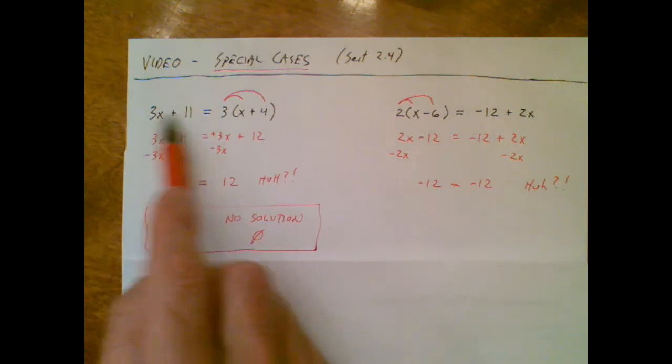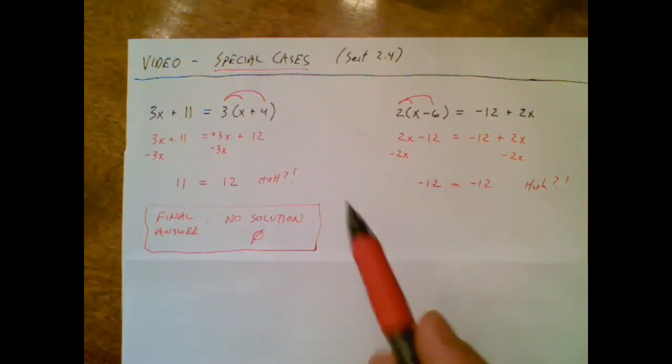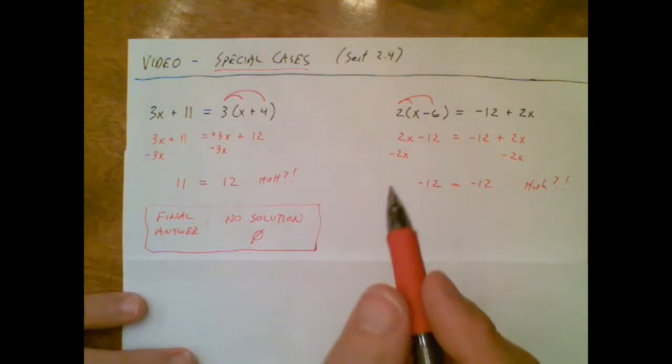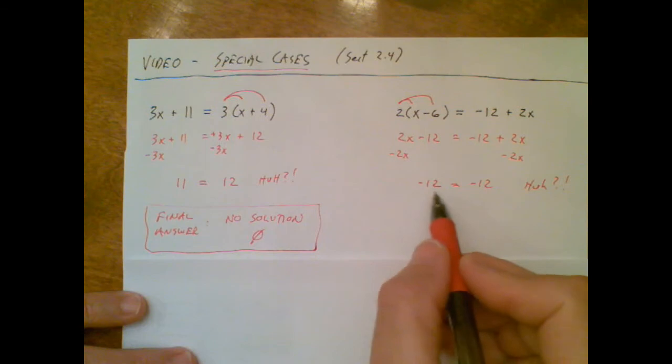There is no x in the entire world that you can plug into the equation to make this side equal to this side. You could try for 37 years, you will never find one. Well, look over here, the variable left the building, but I got a true statement. Negative 12 does equal negative 12.